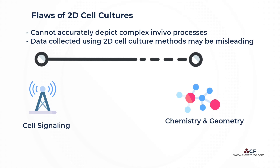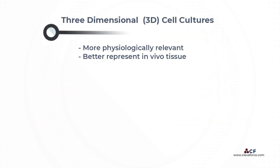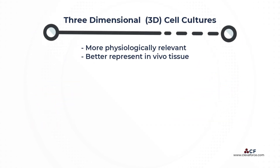For a long time, scientists studied cellular and disease mechanisms using flat 2D cell cultures grown on a plate. However, 3D cell cultures have grown in popularity over the last decade because they are more physiologically relevant and better represent in vivo tissue.